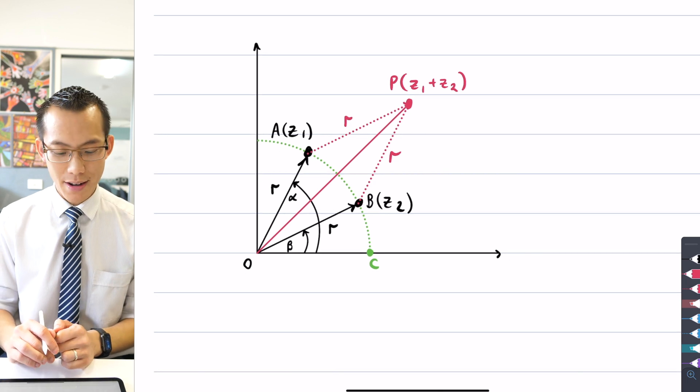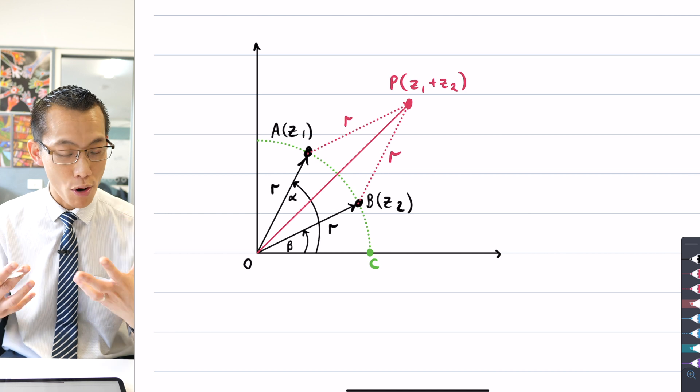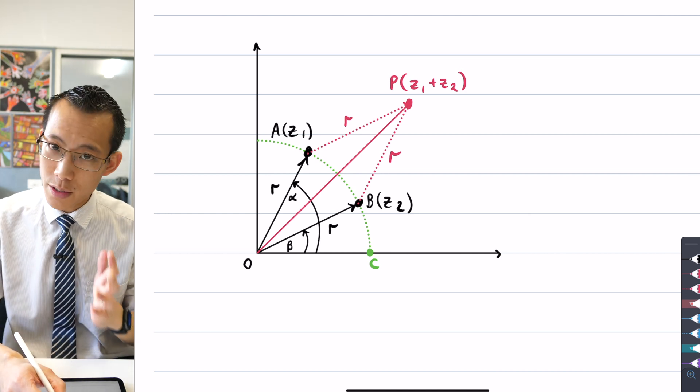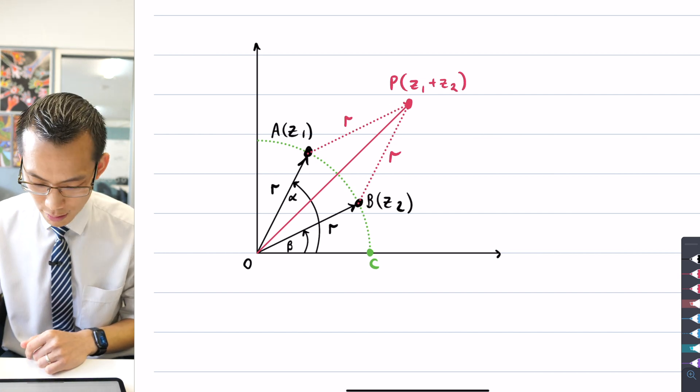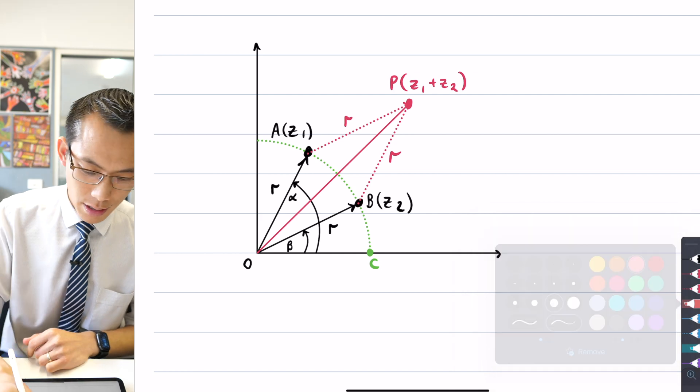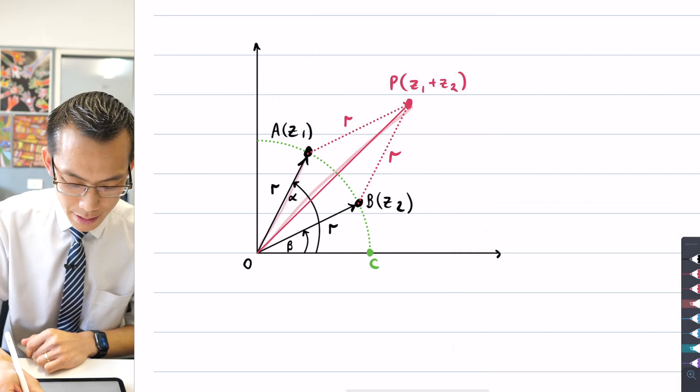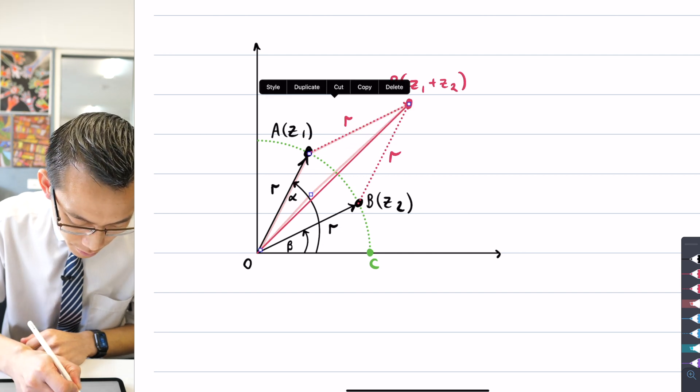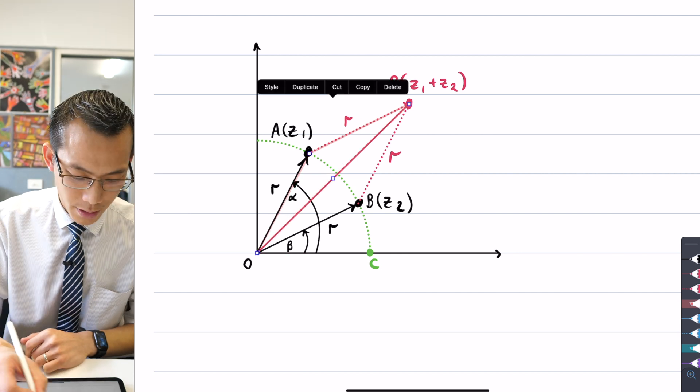Now, you may well remember that what you've got here is a rhombus which has lots of important properties. For example, you can see that I've got congruent triangles on the opposite sides of this diagonal. Let's highlight this triangle up here. Let's fill this in so you can see what's going on here.